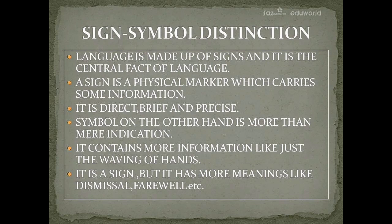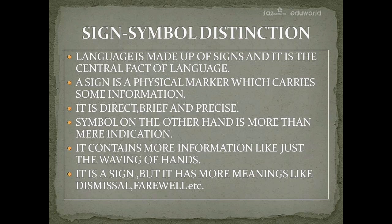The next distinction is sign and symbol. Language is made up of signs, and it is the central fact of language. A sign is a physical marker which carries some information — it is direct, brief, and precise. A symbol, on the other hand, is more than mere indication; it contains more information. For example, the waving of hands is a sign, but it carries multiple meanings such as dismissal, farewell, etc.